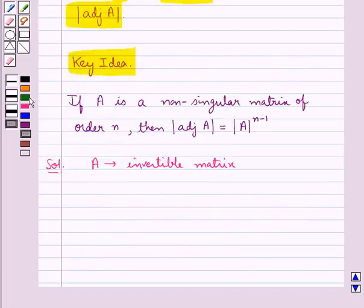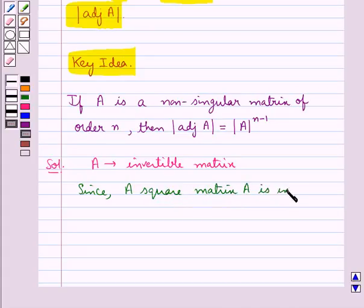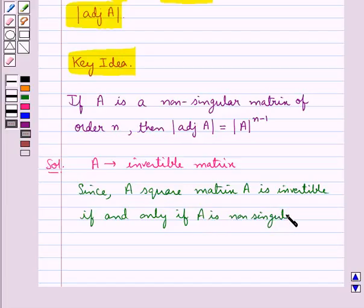Since a square matrix A is invertible if and only if A is non-singular,